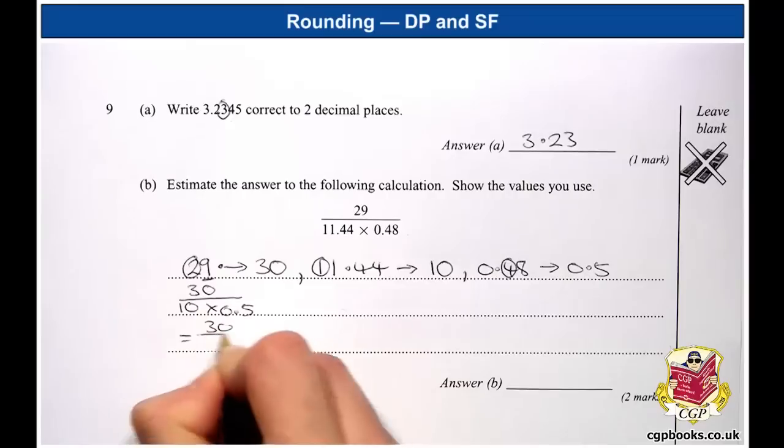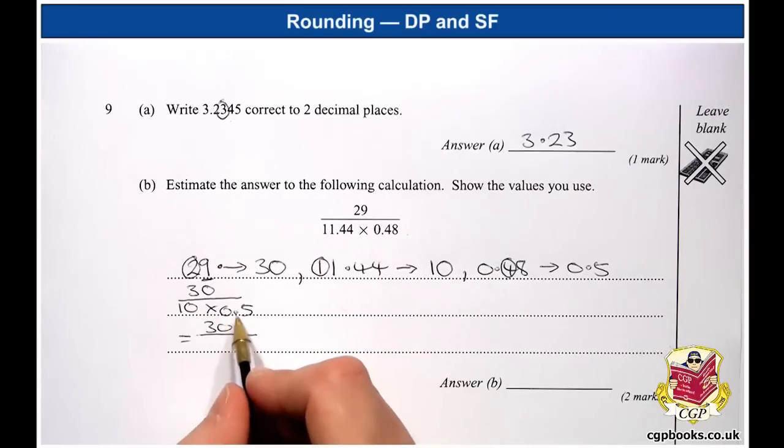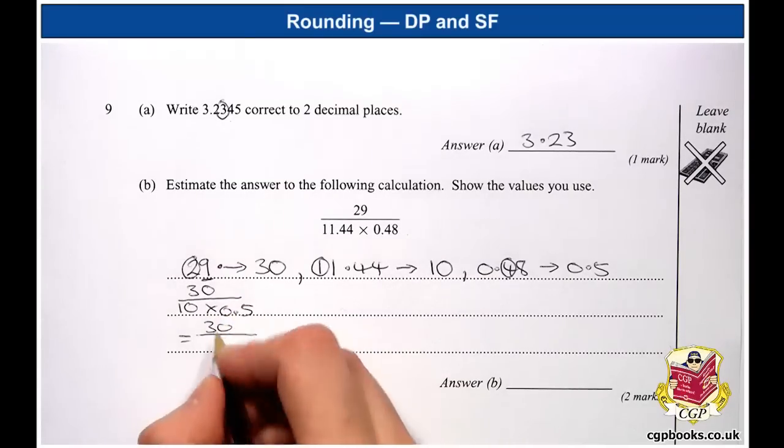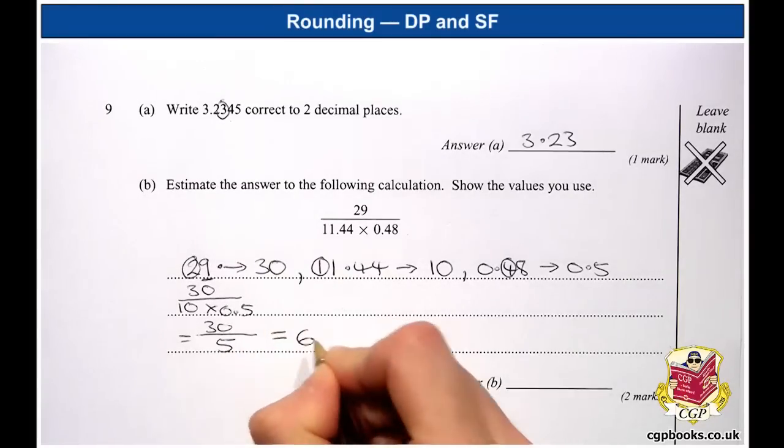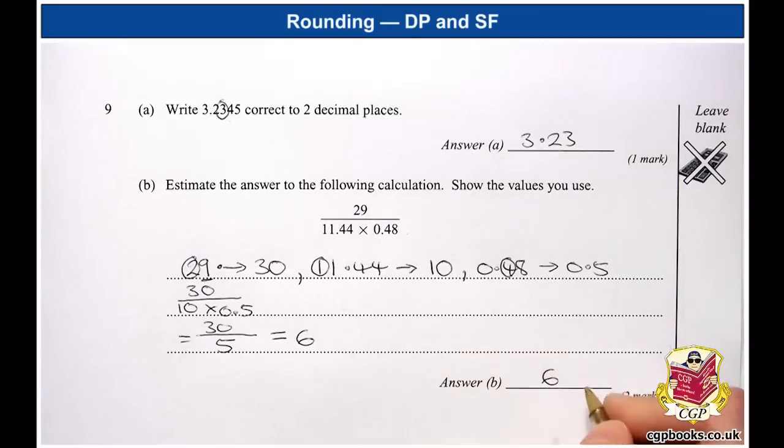So that's 30. And this is just times by 10, so we can move the decimal point. And we get 5. So that's 30 divided by 5, which is 6. And so 6 is our answer.